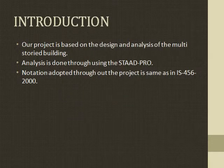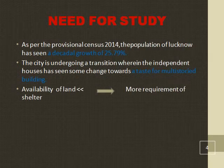Introduction. The project is based on the design and analysis of a multi-storied building, and the analysis was completely done using STAAD Pro. Notation was adopted using code books such as IS 456-2000. As per the provisional census 2015, the population of Lucknow has seen a decadal growth of 25.79%. To accommodate this large population, the need for high-rise buildings such as G plus 15 multi-storied buildings is extremely necessary. The city is undergoing a transition where independent houses are shifting towards multi-national building styles.